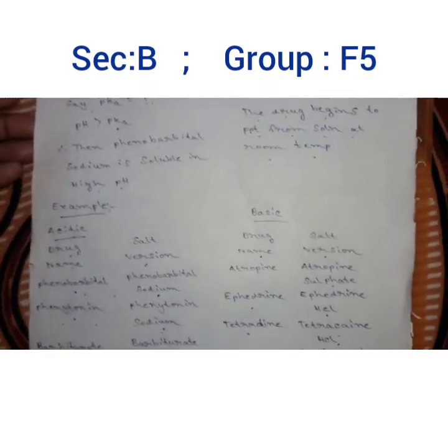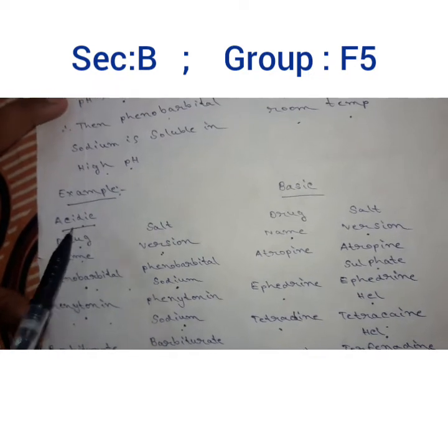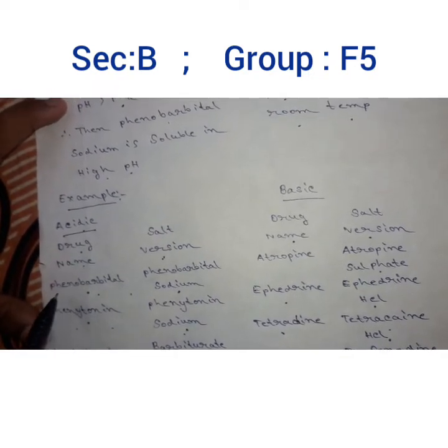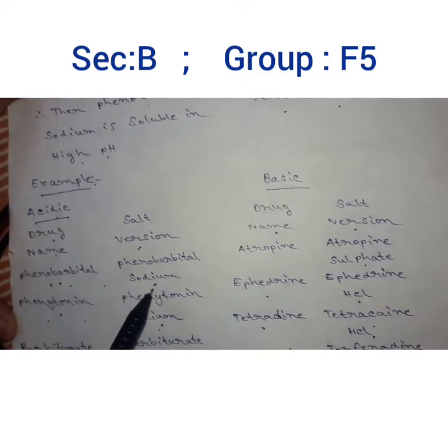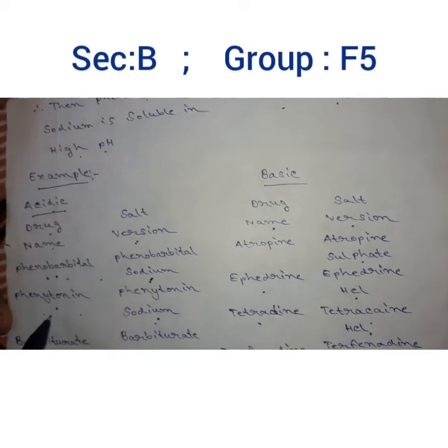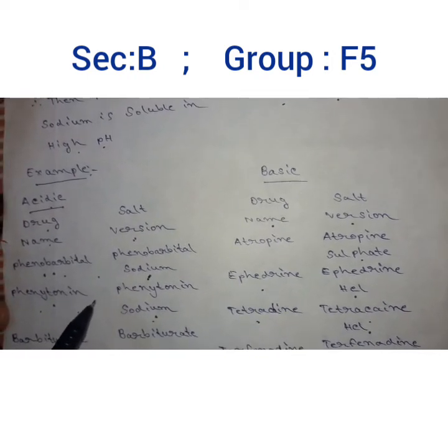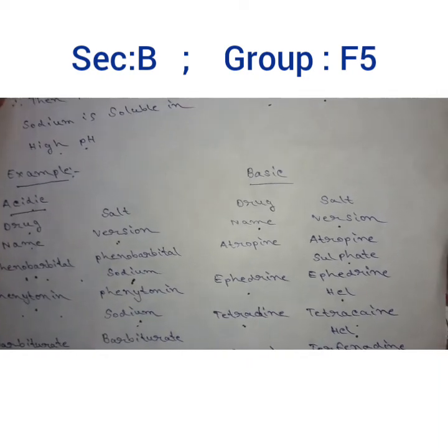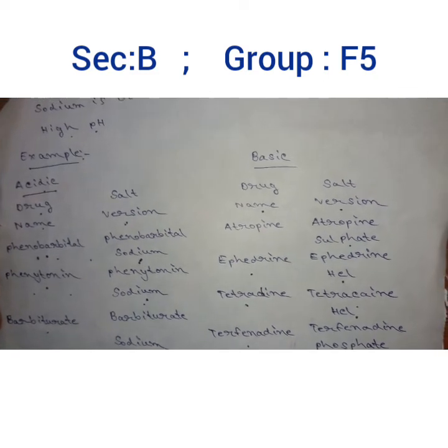Now let's see some examples. First, take acidic drugs. Phenobarbital will react with NaOH to form the salt version: phenobarbital sodium. Phenytoin reacts with NaOH and forms phenytoin sodium. Barbiturate reacts with sodium NaOH and forms barbiturate sodium.